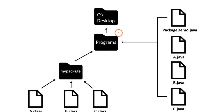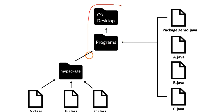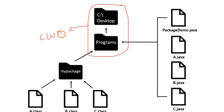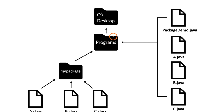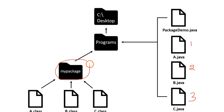So this is the example I am going to use in this demonstration. I am going to create a folder called programs, available at the location C:\Desktop. This is the current working directory where I am going to store all my Java files. I will create A.java, B.java, and C.java — the actual class files which I am going to store in the package called mypackage.